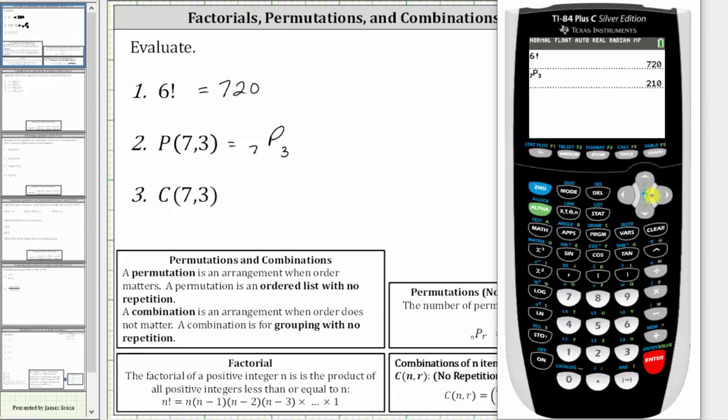I also want to mention, on the newer TI-84, we did not have to enter seven first. We can also press math, right arrow to probability, option two for permutation, and then press seven, right arrow, three, enter, and get the same result.